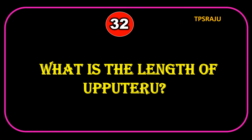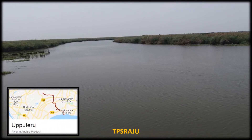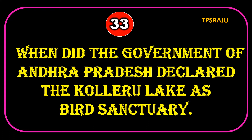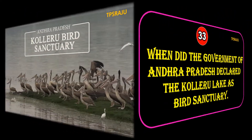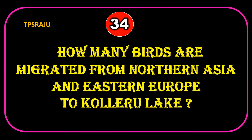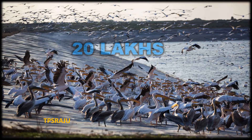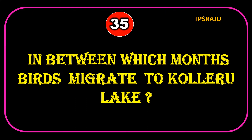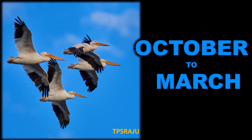What is the length of Puppu Teru? 65 km. When did the government of Andhra Pradesh declare Kolleru Lake as a bird sanctuary? In November 1999. How many birds migrate from Northern Asia and Eastern Europe to Kolleru Lake? 20 lakhs. In between which months do birds migrate to Kolleru Lake? October to March.